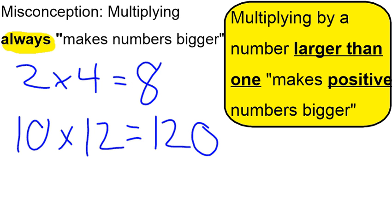In actuality, we have to settle for a more limited statement. Multiplying by a number larger than 1, as we've done in both of these cases—we've multiplied by something that was larger than 1, 4 and then 12—it made our positive numbers bigger.